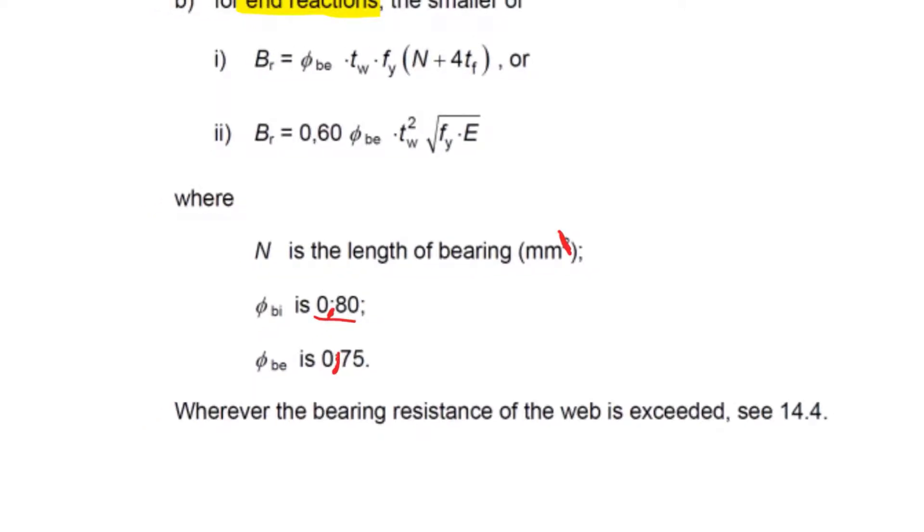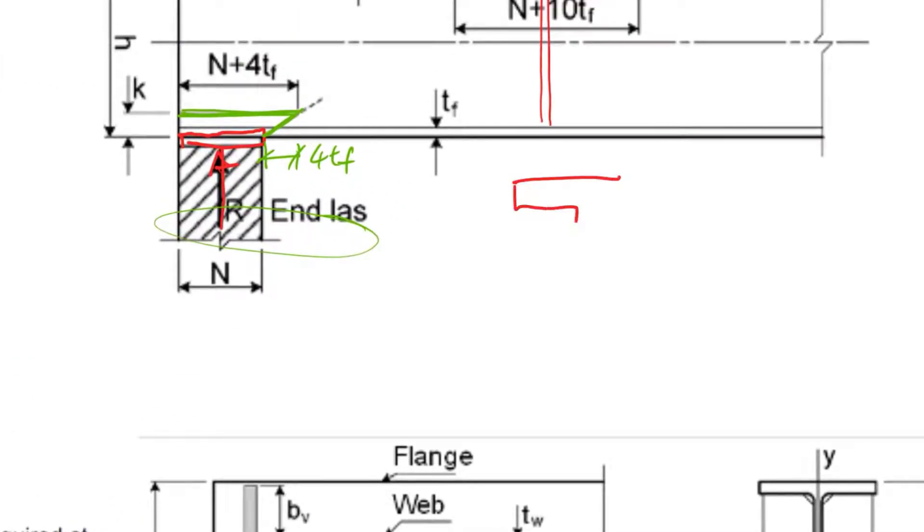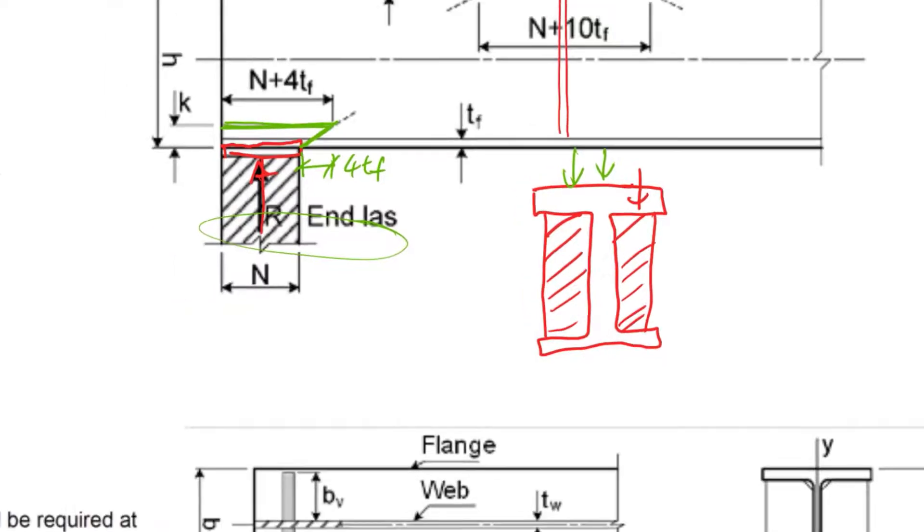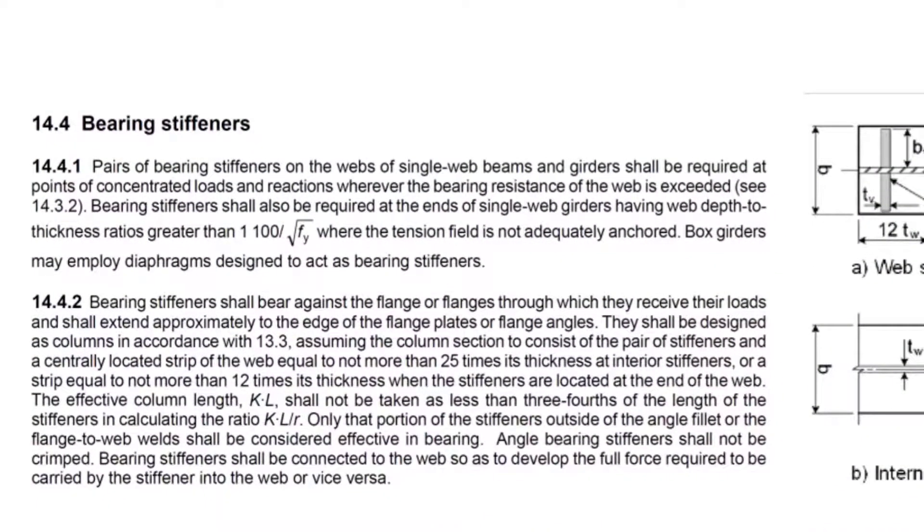What happens if we load it and the bearing resistance is exceeded? Say we've got a big silo or machine that puts a point load on our beam and it's not strong enough. We put in a bearing stiffener. As a side note, if you've got a beam with any piece of machinery on top and you're not 100% sure it's going to be exactly in the middle, just put in a web stiffener. Often that load is not exactly where you think it is, so just put in stiffeners under any high point loads.